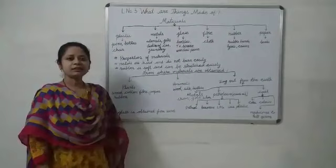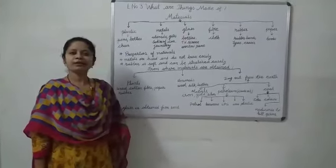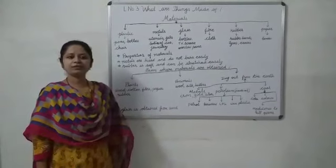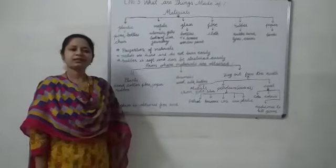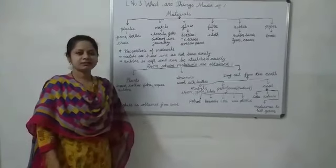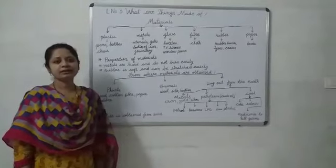If you see these things, you will find that all these things are made of different materials. If you see table, it is made of wood. If you see your toys, they are made of plastic. Like that, other things are made of other materials.